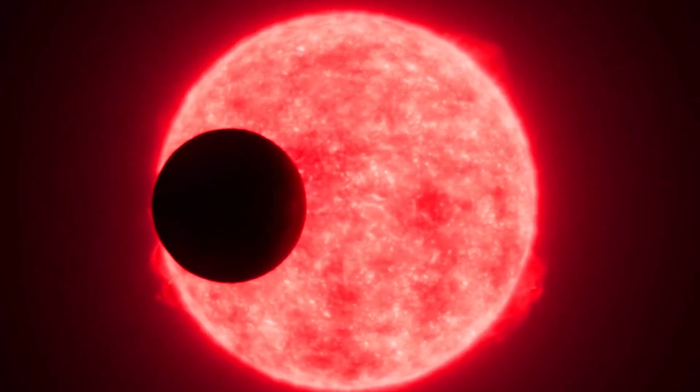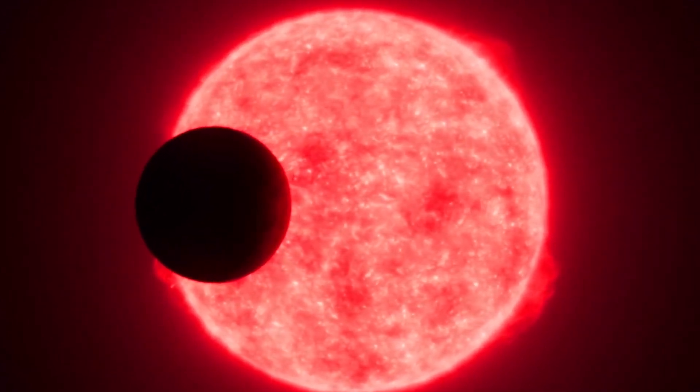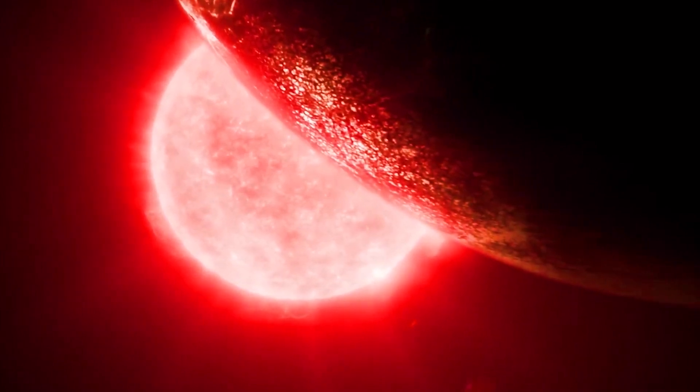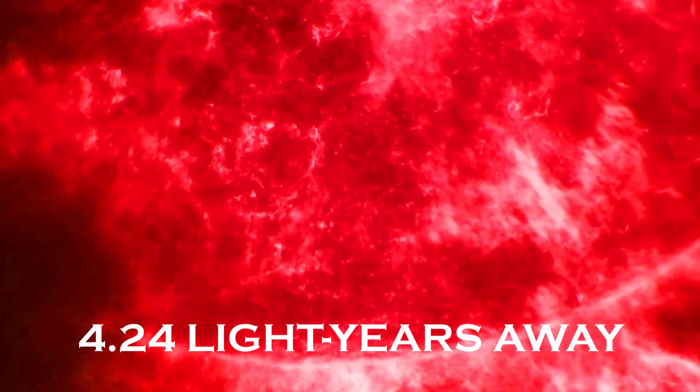You don't need a telescope to see Alpha Centauri. Three stars work together to make Alpha Centauri the third brightest star system in the sky, and Proxima Centauri is the closest star to Earth, 4.24 light years away.